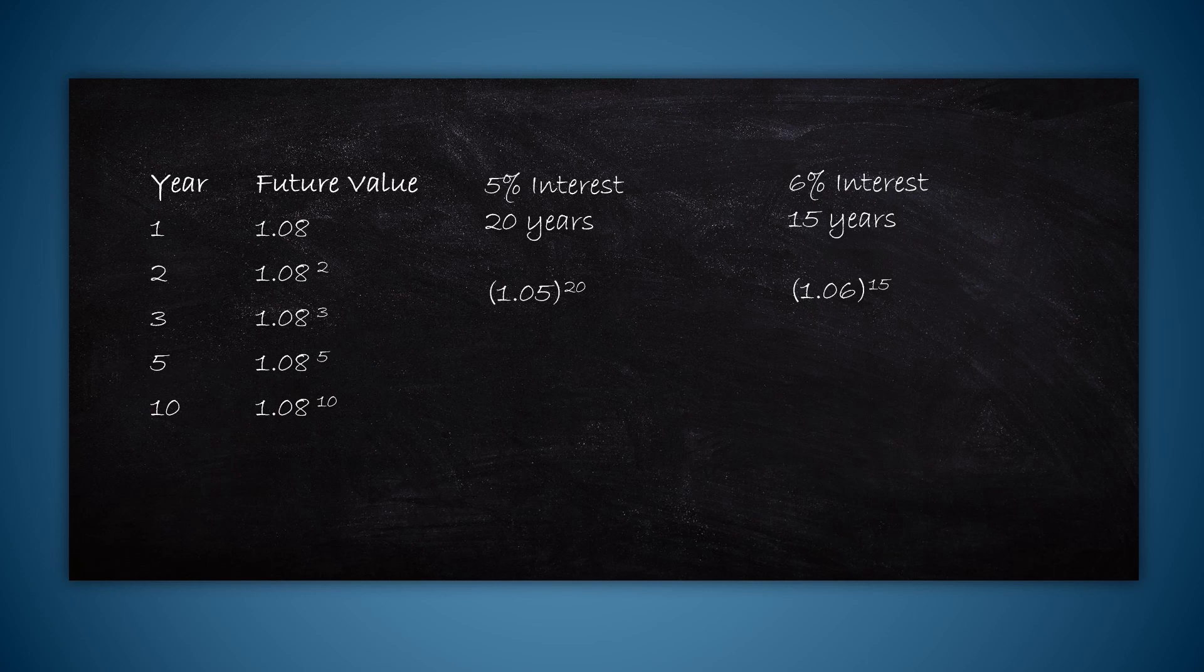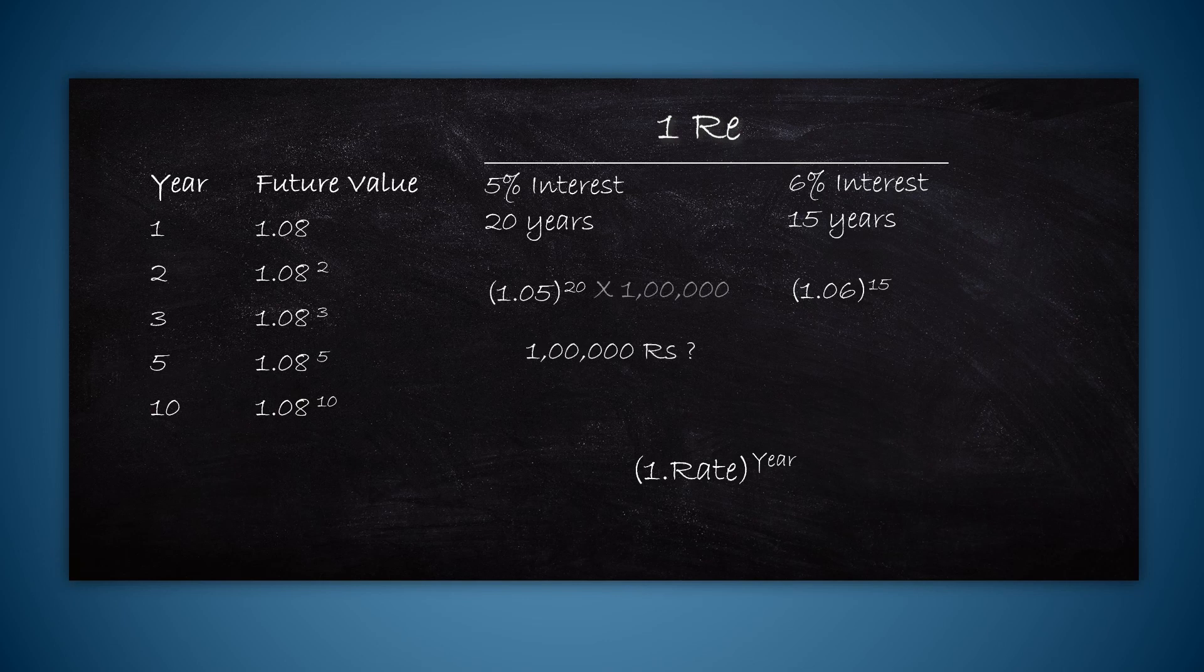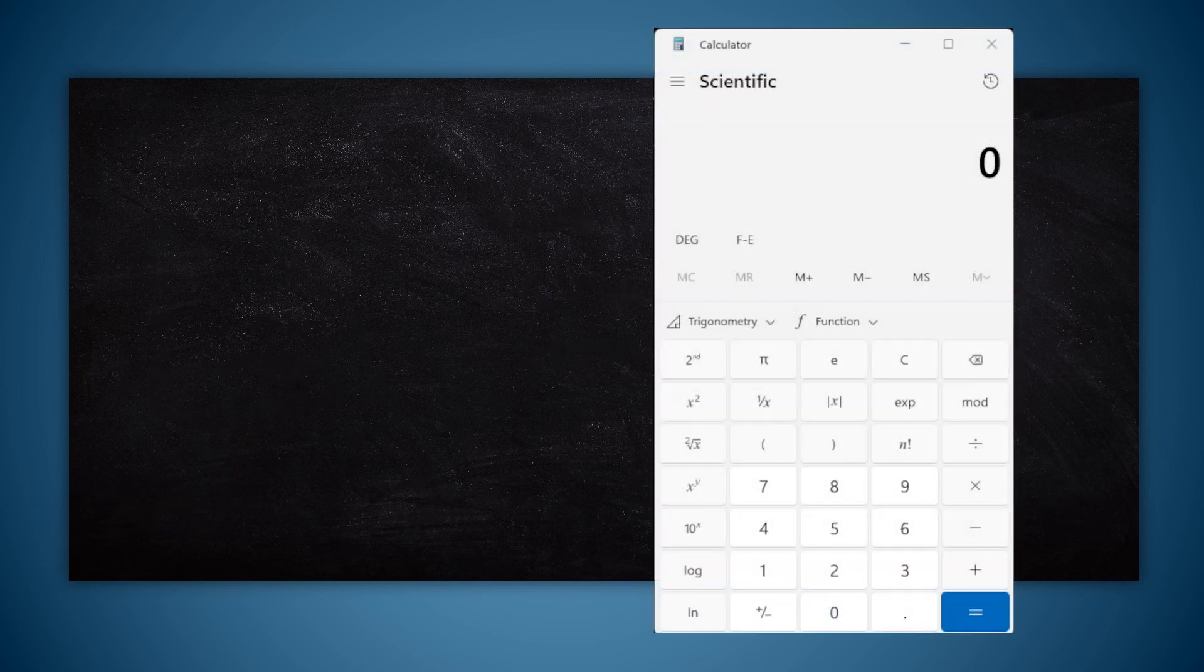It's quite simple. So the generic way to remember this is 1.rate to the power year, where rate is in decimal format. Now all of this is for one rupee. What if we want to know for 10 rupees? We simply have to multiply this number by 10. If we want for 20 rupees, you multiply it by 20. If you want for 1 lakh rupees, you multiply by 1 lakh. This is easy to calculate on a calculator as well without needing to use pen, paper, or equations.